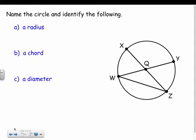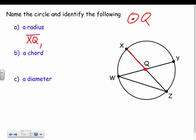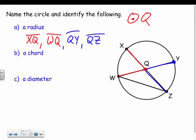Let's name a circle and identify its parts. The circle is called circle Q because Q is the center. Let's name the radii — remember, it goes from the center to any endpoint on the circle. So we have XQ, WQ, QY, and QZ. They're all segments, so just a line segment notation on top.